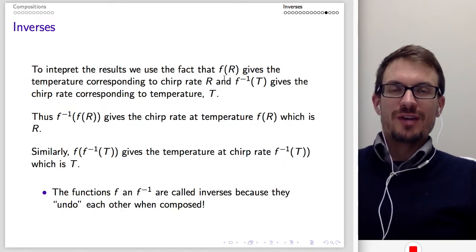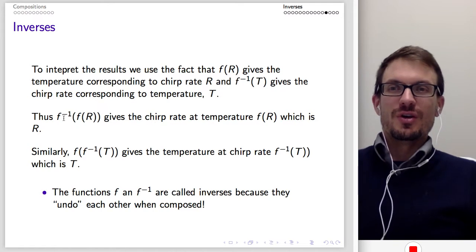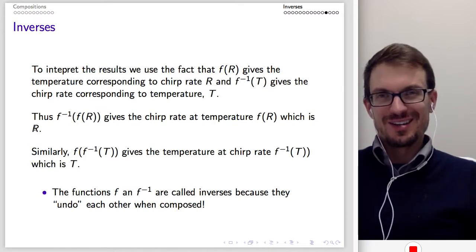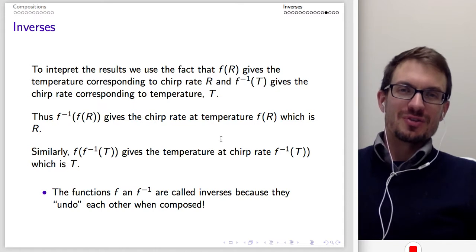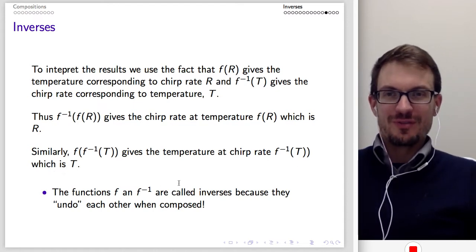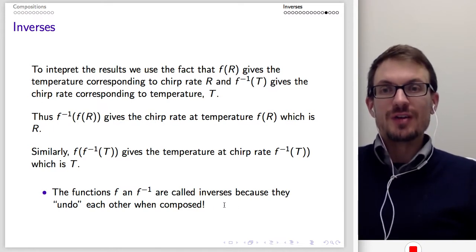To interpret these results: F of R gives the temperature at chirp rate R, and F inverse of T gives the chirp rate at temperature T. So F inverse of F of R gives the chirp rate at temperature F of R, which is just R. And F of F inverse of T gives the temperature at chirp rate F inverse of T, which is just T. The functions F and F inverse are inverses precisely because they undo each other when composed.